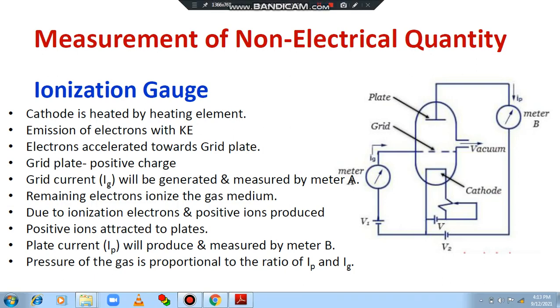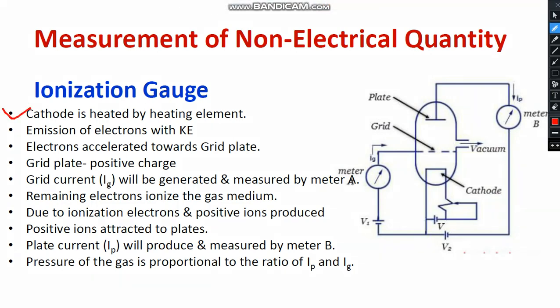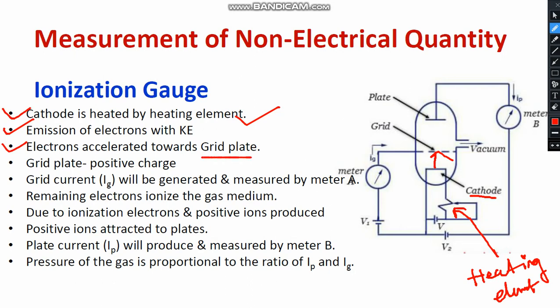Now let us move on to the individual segments. The cathode is directly connected with the heating element. With respect to the pressure, the cathode will be activated and it starts emitting electrons. The kinetic energy of the electrons also increases as pressure increases. The electrons start accelerating towards the grid plate.